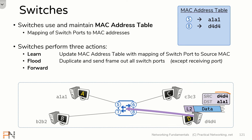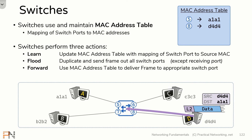Now the switch has to figure out what to do with this response frame. It looks at the destination MAC address A1A1 — and the difference now is that the switch knows how to deliver a frame to A1A1. It knows A1A1 exists out port 5. This allows the switch to simply forward that frame out the appropriate switch port. That is the third action: the forwarding action. The forwarding action allows the switch to deliver a frame directly to the appropriate port because the destination MAC address exists in the MAC address table. This sends the frame directly to host A.